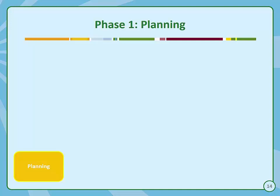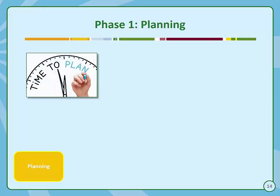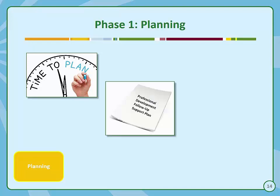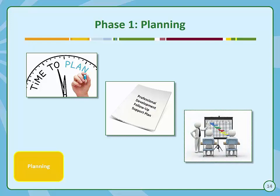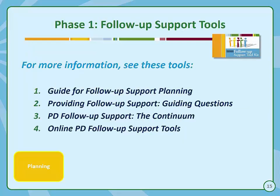The first phase of follow-up support is planning. Planning for follow-up support should begin during the design phase of a professional development event. A comprehensive plan, including tools and a timeline, should be developed before the event and participants should be informed of the plan before and during the event. Follow-up support plans must take into account the skills and knowledge of the trainer or facilitator and the available resources, and should include data on participants such as their needs and perceived barriers. The Professional Development Follow-up Support Toolkit includes four resources to help you plan your PD effort, found in the Phase 1 Follow-up Support Tools section.